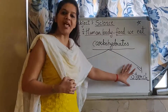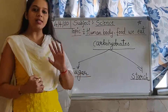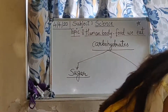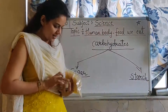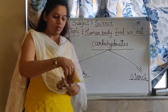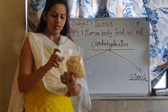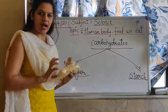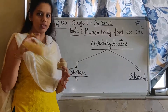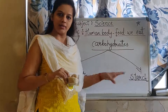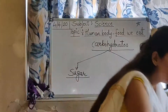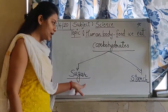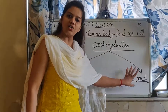Now we will see examples of starch carbohydrates. For example, potato, pasta, and rice — these are all examples of starch carbohydrates. If you eat these, you will get starch carbohydrates. So there are two types of carbohydrates: sugar carbohydrates and starch carbohydrates.